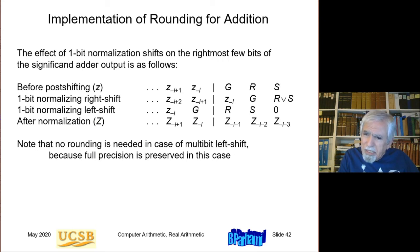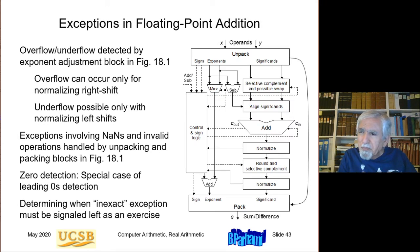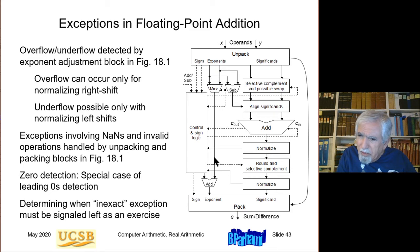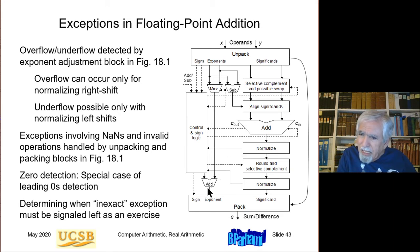Rounding using the guard, round, and sticky bits is described in further detail in a slide that we will skip here. Floating-point addition can produce overflow and underflow exceptions — overflow can occur if the exponent adjustment after normalization increments an already maximum exponent, or if a large normalization shift adds a large value to the exponent.